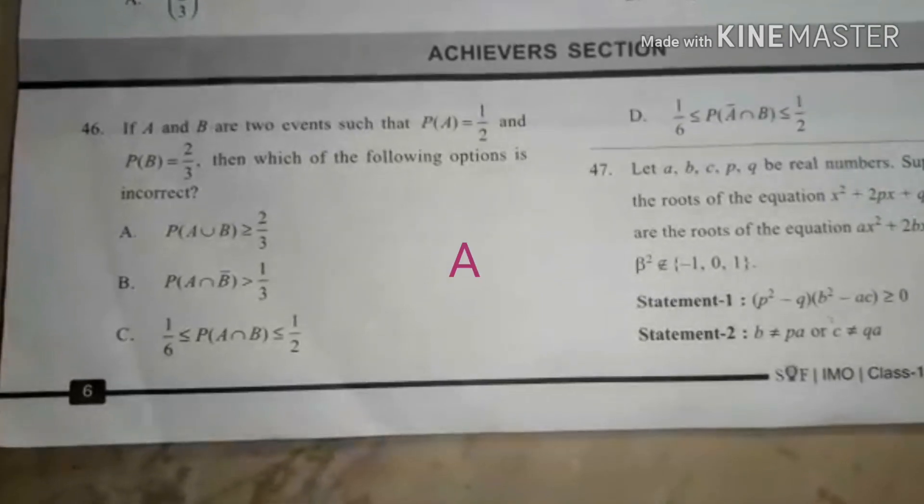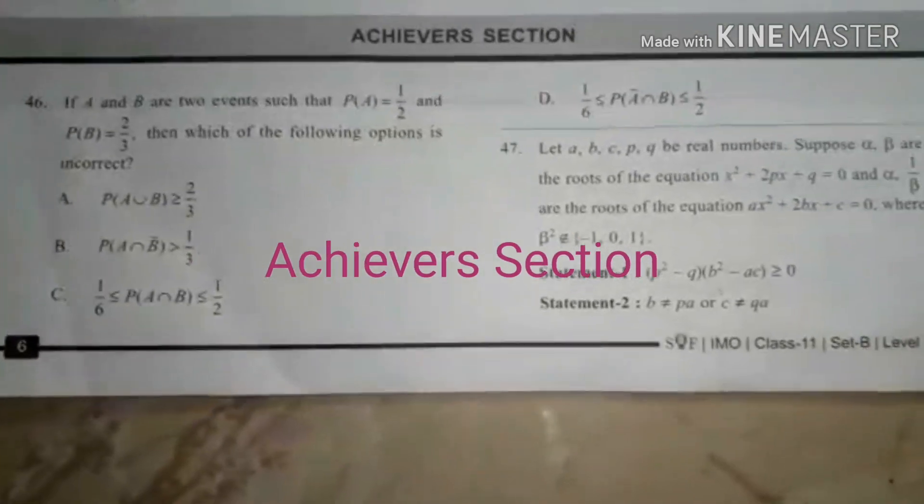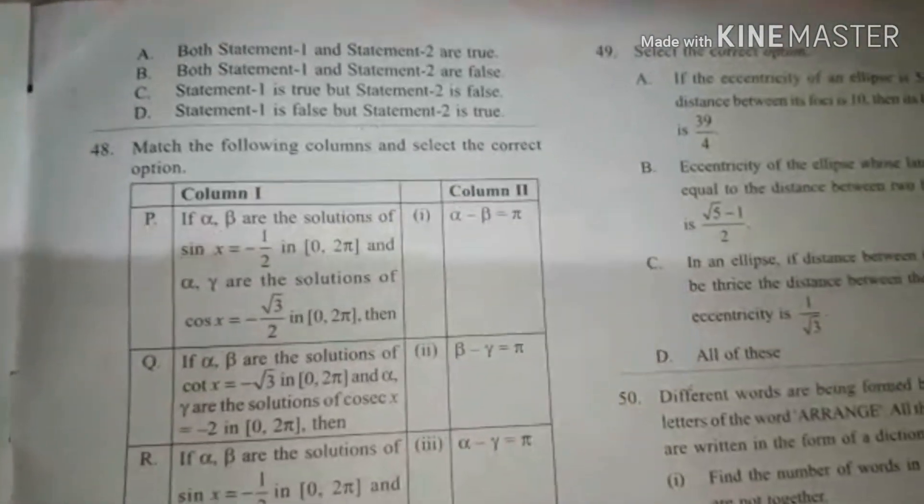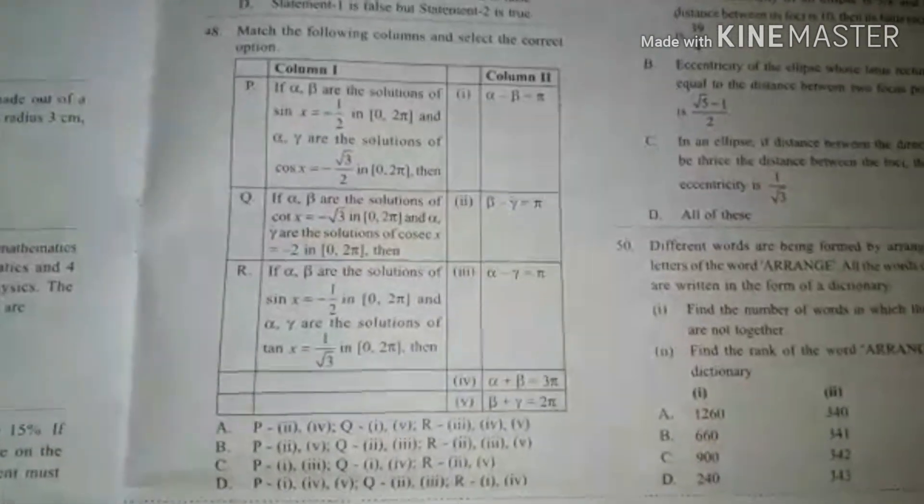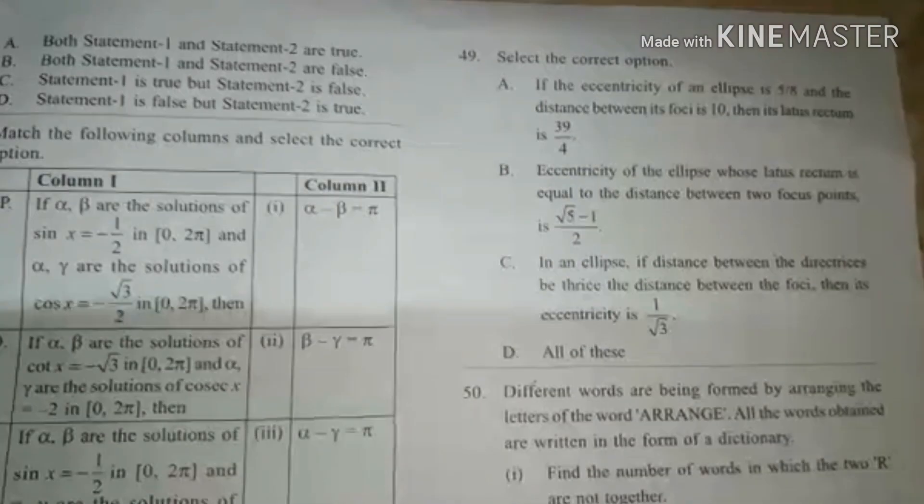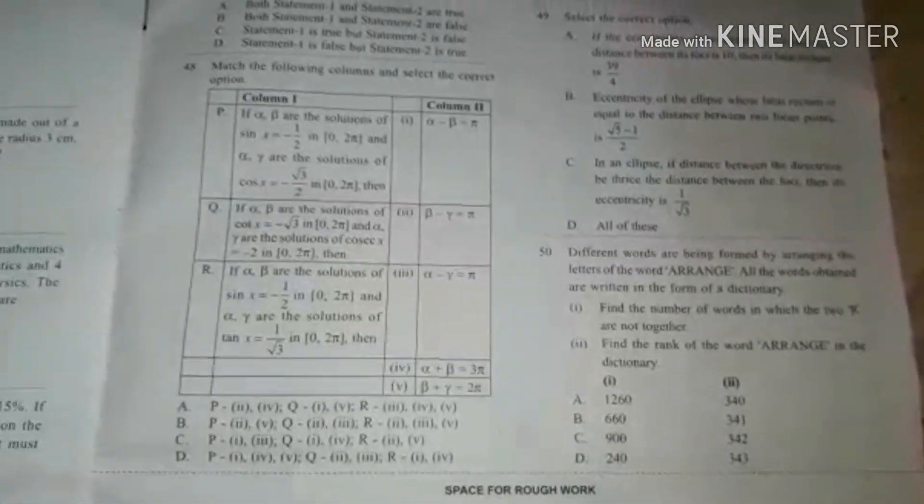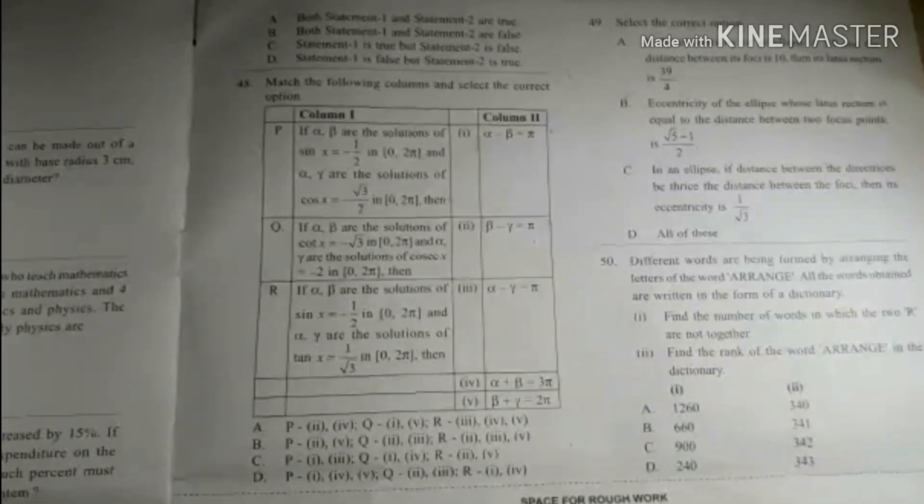And fourth section is Achiever Section, which contains 5 questions, and each question in this carries 3 marks. There is no negative marking. Thank you for watching my video.